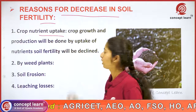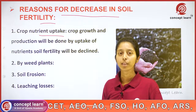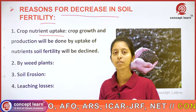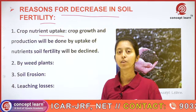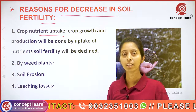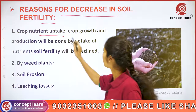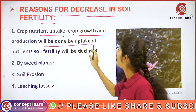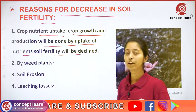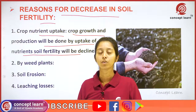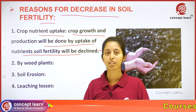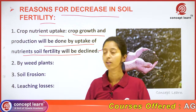One factor is crop nutrient uptake. Crops continuously take the nutrients which are present in the soil. Because of the uptake of nutrients by the crop, the nutrient content in the soil is decreasing, and ultimately the soil fertility is also changing. Crop growth and production are done by uptake of soil nutrients, so as we grow crops continuously, they uptake the nutrients present in the soil, which results in declining soil fertility.